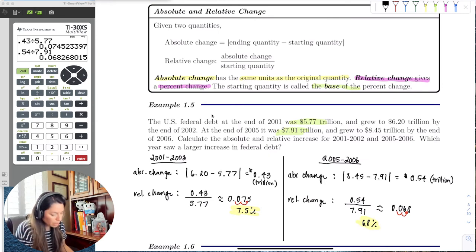So then what does this tell us? Well, it says originally that we saw the absolute change. We saw 2005-2006 have a larger increase amount in trillions of dollars. But in actuality, when we take it, when we look at the percent increase,